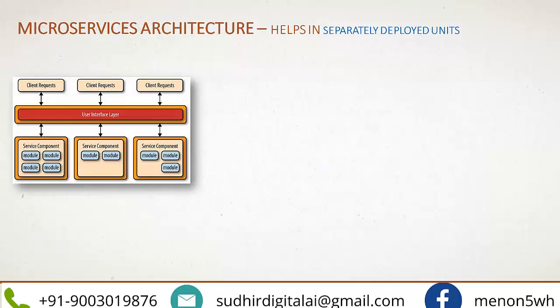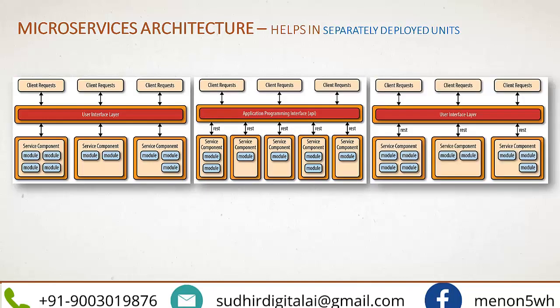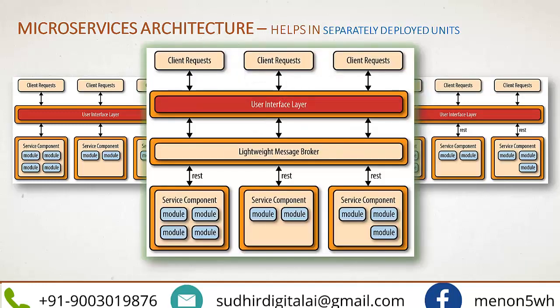Those wanting to learn cloud native should study the 12-factor app methodology for building software services — it covers 12 factors required to run applications optimally on the cloud. For microservice architecture, there is a client request to an interface layer, with different service components built and consumed via REST calls. Microservices are separately deployed units — each module is independently running and served.